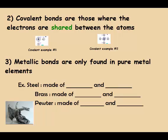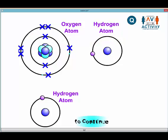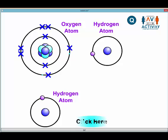Covalent bonds are those where the electrons are going to be shared between atoms. Covalent bonds are between nonmetals — between two or more nonmetals. An example of a covalent bond is between oxygen and hydrogen; both of those are nonmetals.